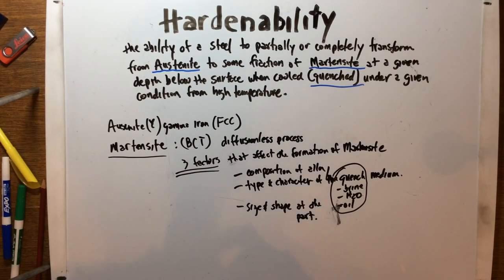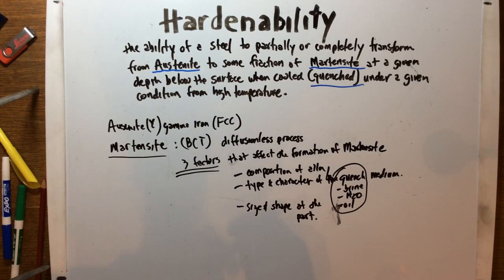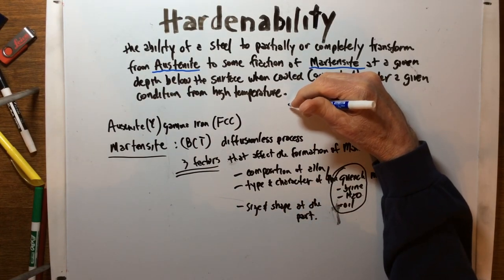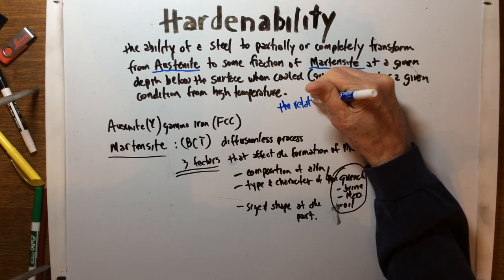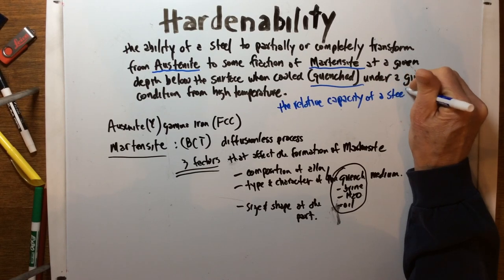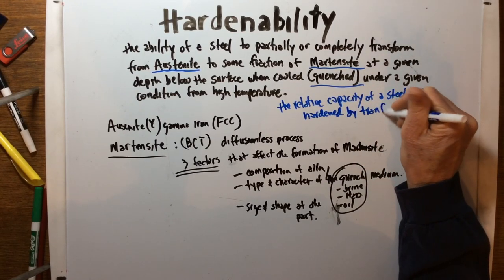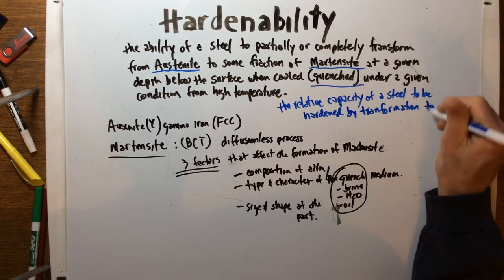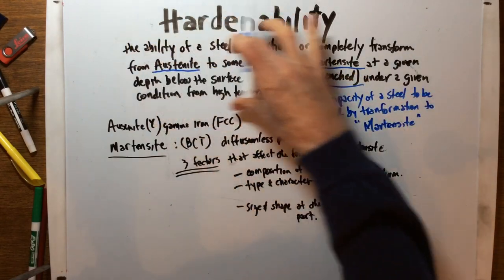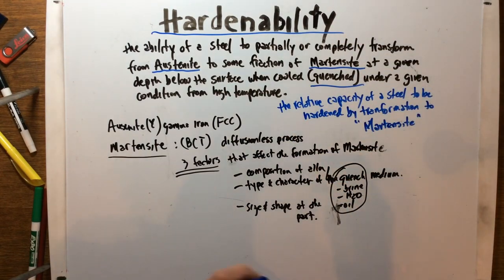With that taken care of, we can summarize the definition: hardenability essentially just means the relative capacity of a steel to be hardened by transformation to martensite. That's the down-and-dirty basics of what hardenability is all about.